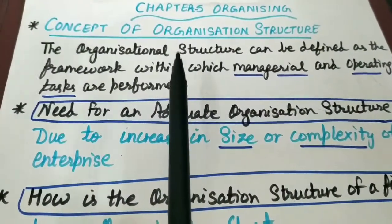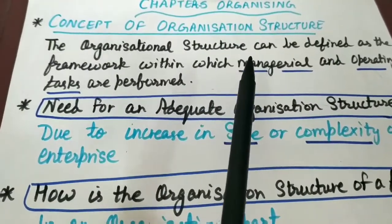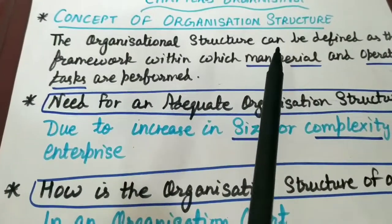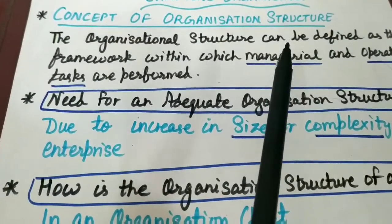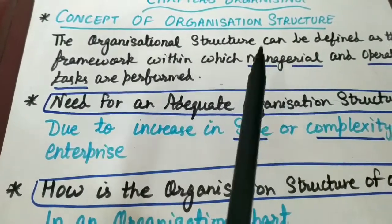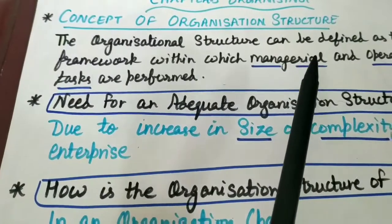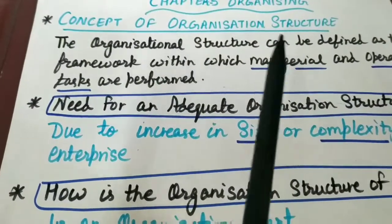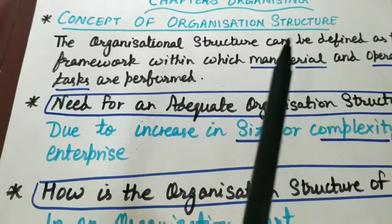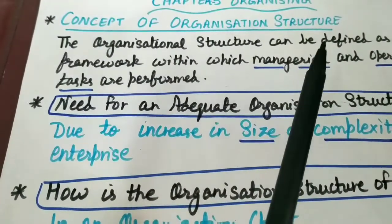When managers of the organization perform the organizing function in the enterprise, at that time organization structure automatically gets created. Organization structure, kisi bhi organization ka, that basically defines the job positions within the organization, the authority and responsibility of different employees working in the organization. We can define organization structure as a network of job positions, responsibilities and authorities at different levels.